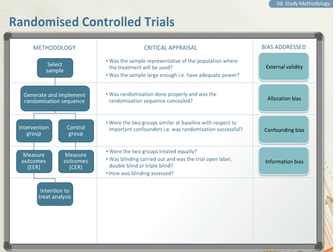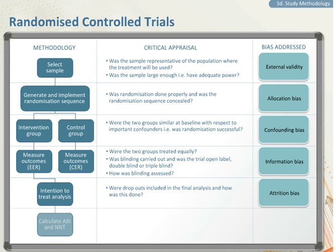Then identify how you will account for dropouts. Ask yourself: were dropouts included in the final analysis, and how was this done? This is to minimize attrition bias. Finally, calculate measures of effect like the absolute benefit increase (ABI) and the number needed to treat (NNT).